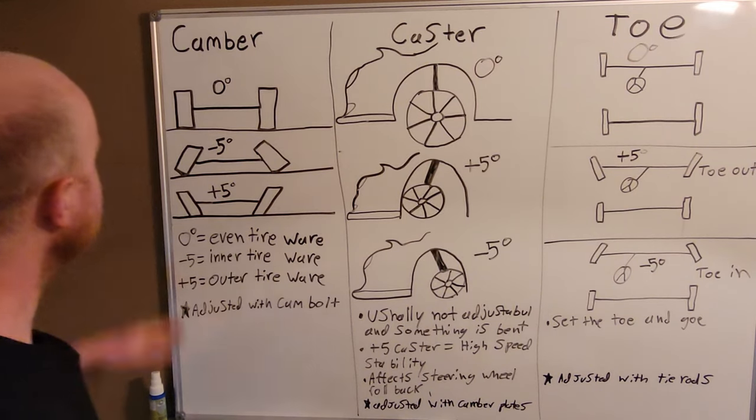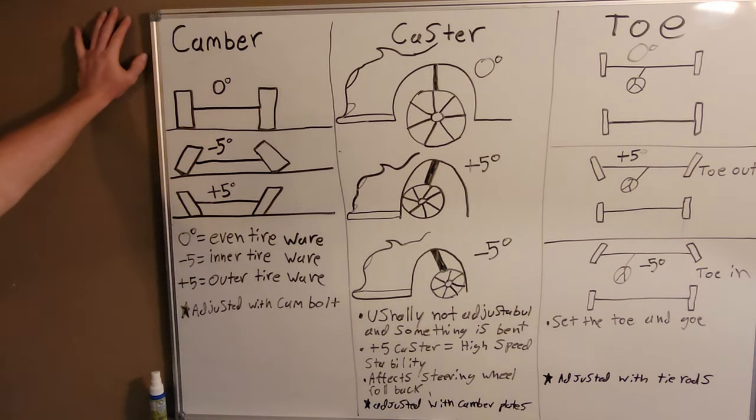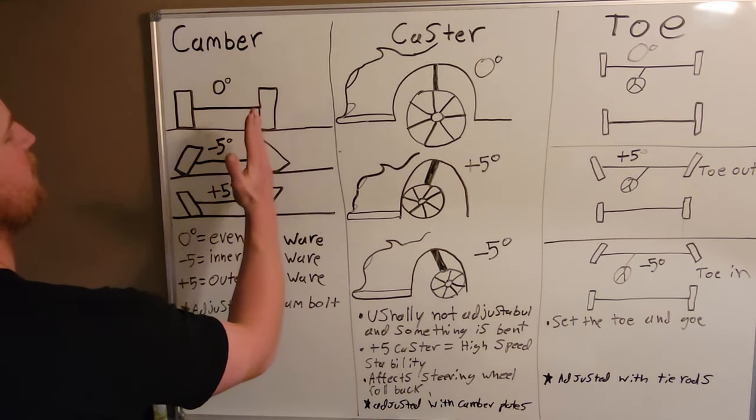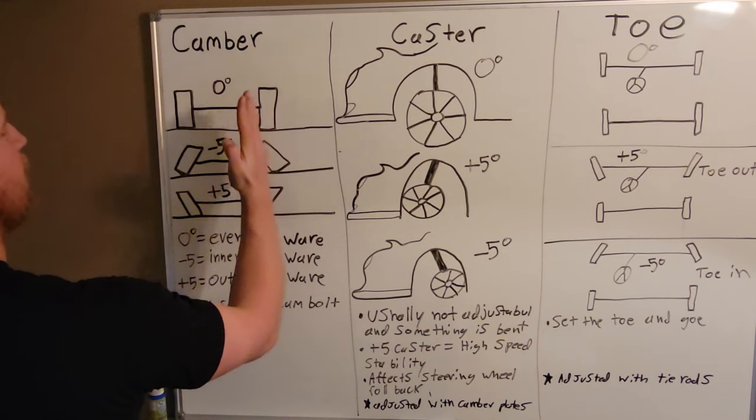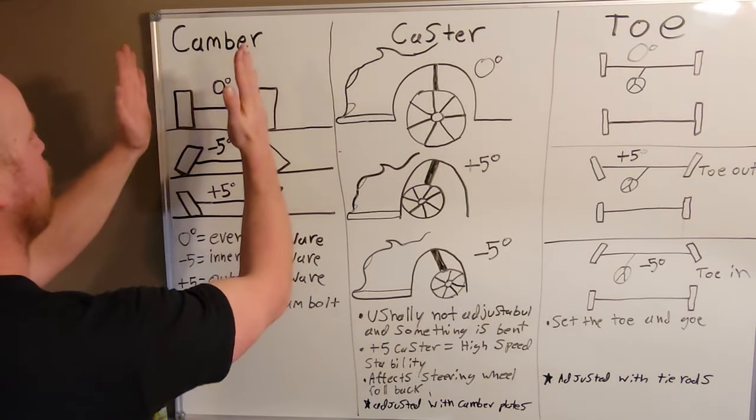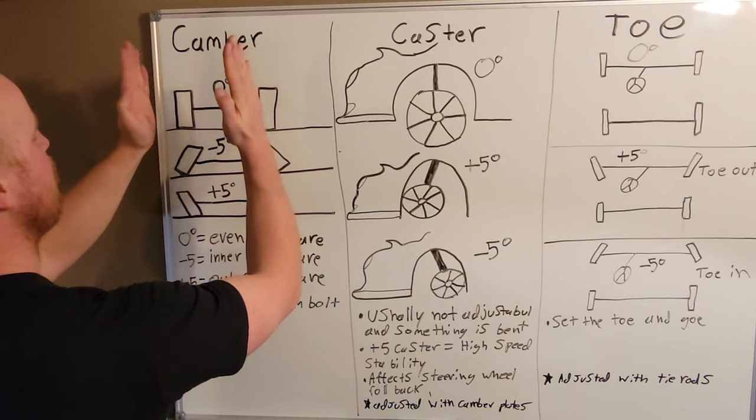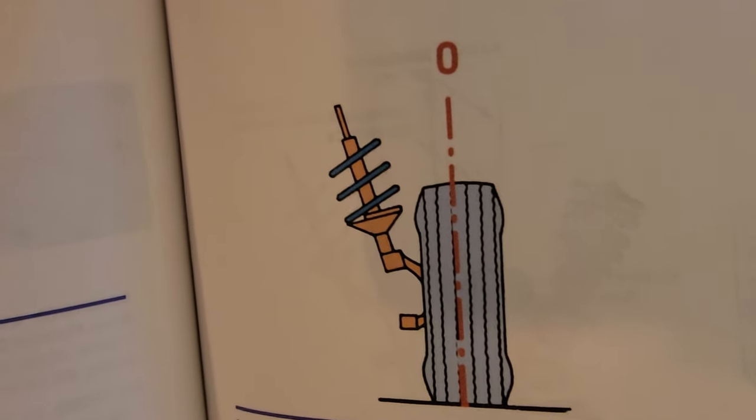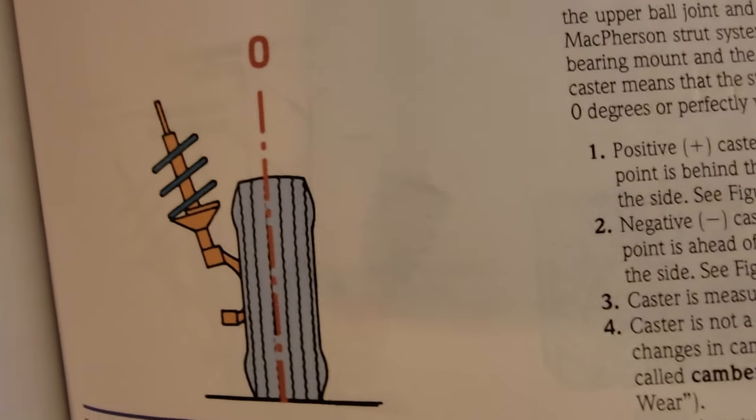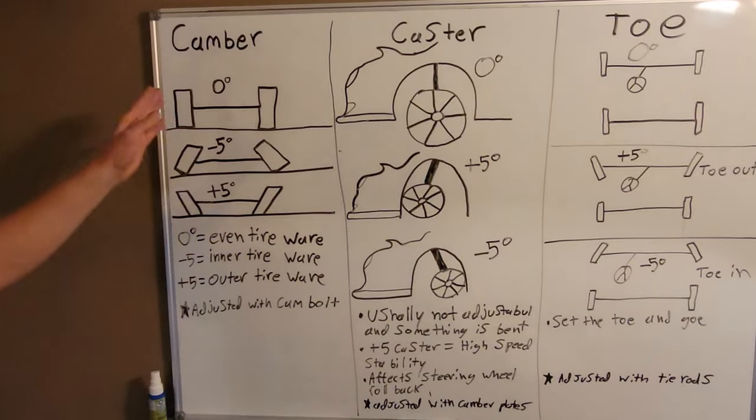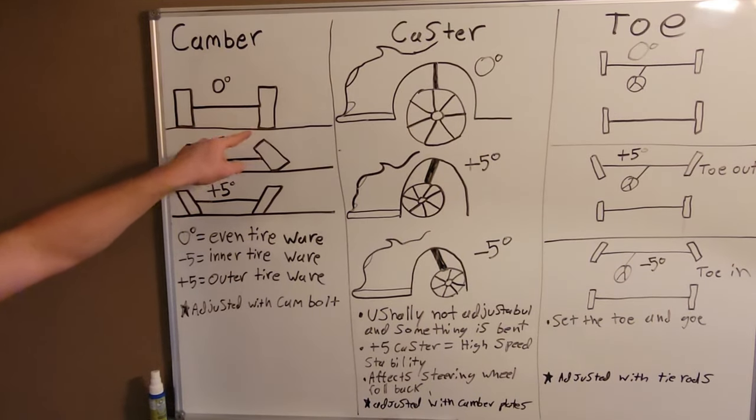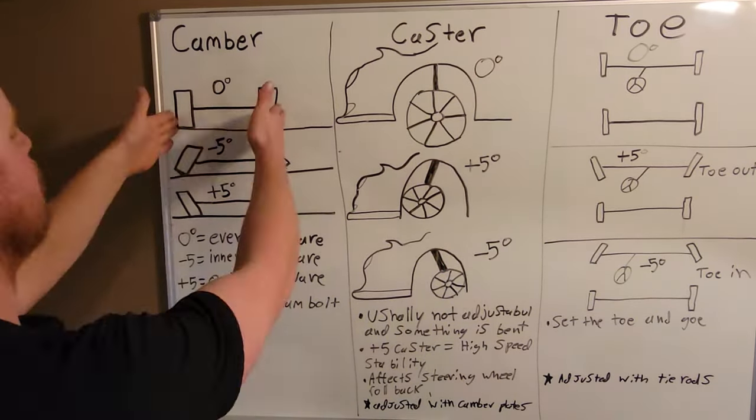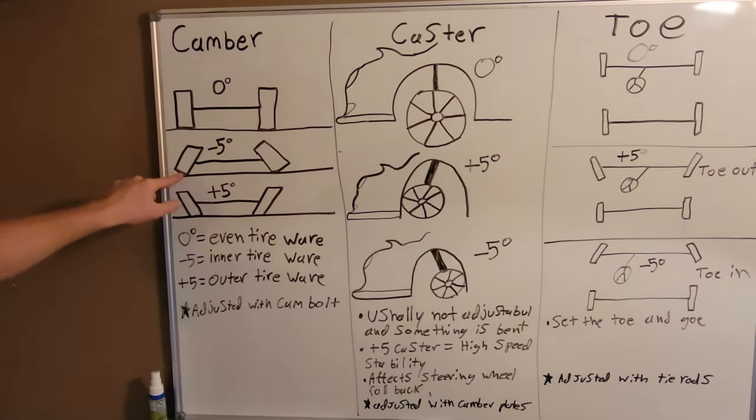So first off, we got camber. Camber is measured in degrees, so imagine an imaginary line going straight up and down, that's zero degrees. Here's your front axle and both your tires. At zero camber, both your tires are straight up and down just like this. That's going to cause even tire wear because the tire is contacting all of the road surface.